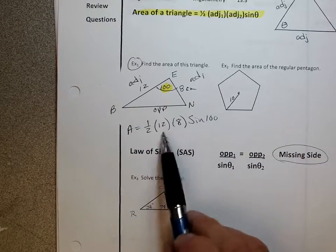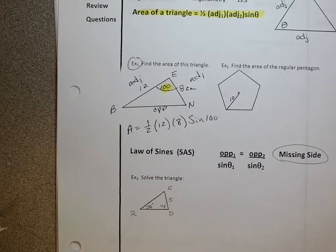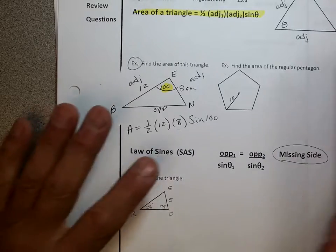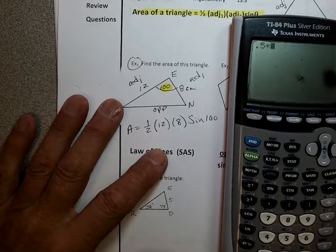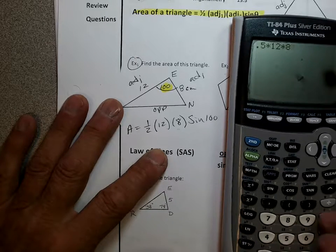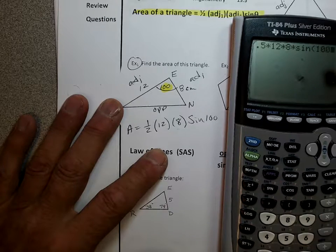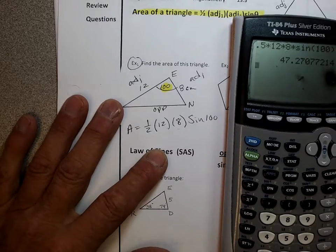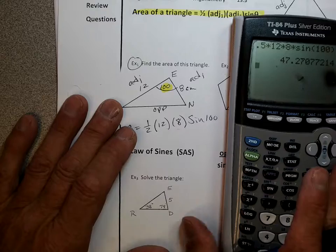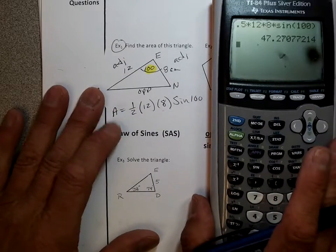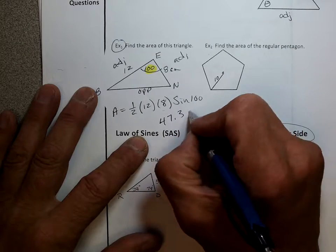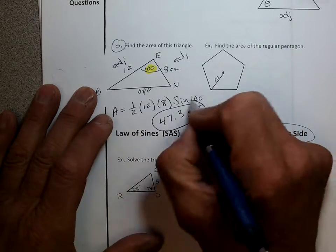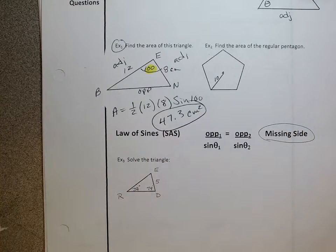And again, adjacent one, adjacent two — you can switch these around, it doesn't matter which one you call first, they're both adjacent. So then I'm just going to use my calculator and go 0.5 times 12 times 8 times the sine of 100. The answer is 47.3 centimeters squared.